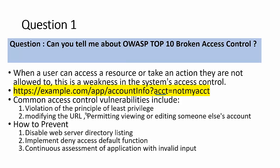Common access control vulnerabilities include violation of the principle of least privilege — logging in as a user but gaining admin privileges — or modifying the URL to view or edit someone else's account. For example, as an employee I can see my salary details, but if I modify the URL from my name to a colleague's name and the server is vulnerable, I can see their salary details.